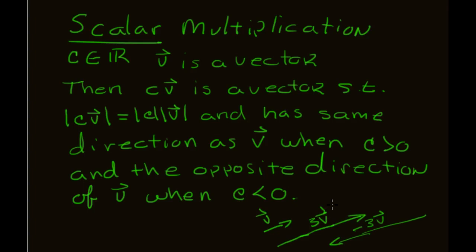Scalar multiplication doesn't change the direction so much as it changes the magnitude. The only change in direction it can produce is reversing to the opposite direction, and that happens when the scalar is less than zero. Also, zero times a vector gives the zero vector, and a scalar times the zero vector also gives the zero vector — so if either the scalar or the vector is zero, the product is zero.